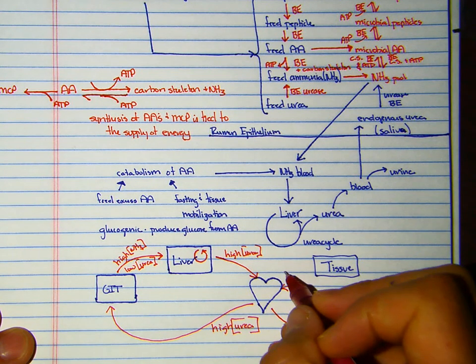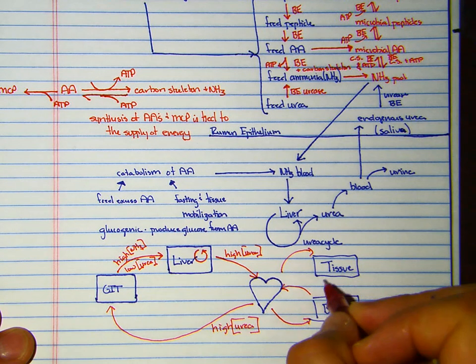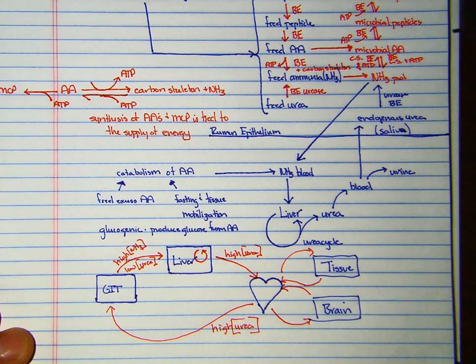In the liver we have the synthesis—we can make the little cycle thing. We have the synthesis of urea, so we have now a high urea concentration which is going to protect the brain. As the heart blood goes back to the heart, it's going to protect the brain and prevent high ammonia from going to the other tissues.